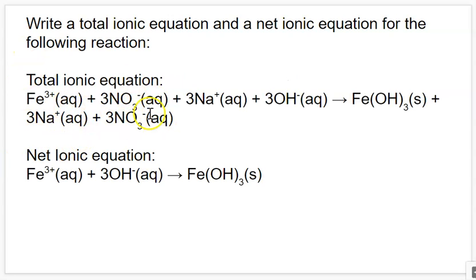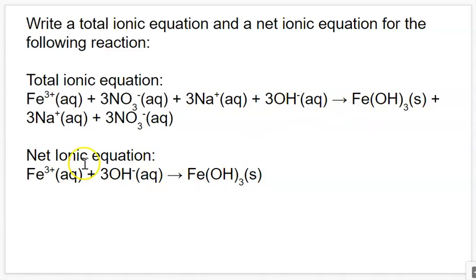So we have one Fe3+, three nitrates, three sodium plus, three hydroxides. Then we have iron(III) hydroxide as a solid — we don't split it up because it's insoluble. And then lastly we have 3 Na+ and 3 NO3− from the sodium nitrate on the product side. To find our spectator ions, we see that nitrate is unchanged on either side and sodium is unchanged on either side. One trend you'll notice is that all ions that are always soluble according to our solubility chart are often the spectator ions, because nothing they form in solution will be insoluble. So we delete those, and we end up with the net ionic equation: Fe3+ combining with three hydroxides to make Fe(OH)3 solid. This is our final answer.